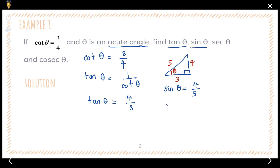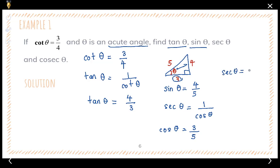Next, we find secant theta. Secant theta is one over cosine theta, so we first find cosine theta. Cosine is adjacent over hypotenuse; adjacent is three and hypotenuse is five, so cosine theta equals three over five. Therefore, secant theta equals one over (three over five), which gives us five over three.